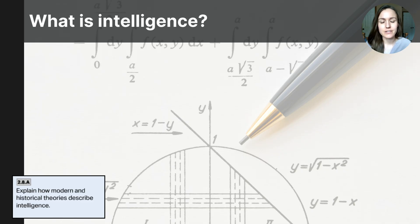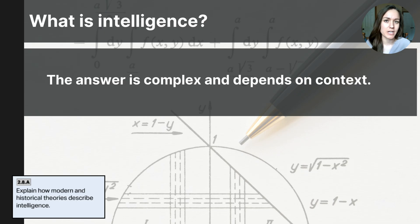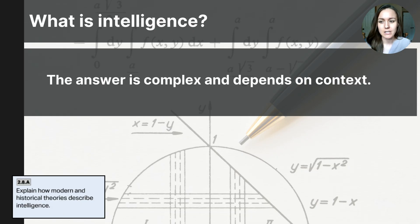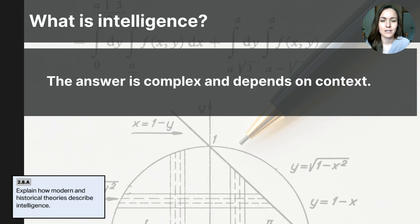So what is intelligence? The answer is complex, and maybe it depends on your context and how you define it. Intelligence is one of the most debated topics in psychology. Questions arise like: what is intelligence? Are we born with it? Can we develop it? How do we measure intelligence and what aspects are measurable? Students often think of intelligence as being school smart, but that just depends on your context.